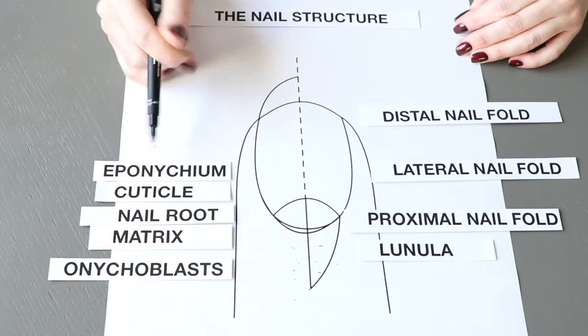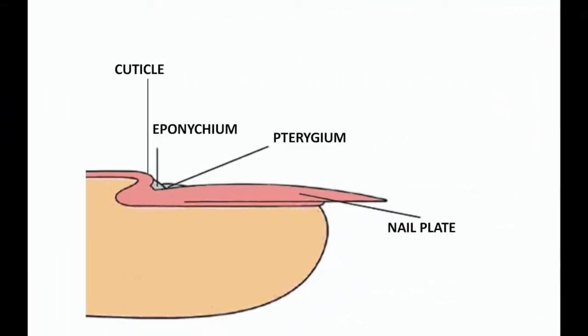Keratinized skin between the cuticle and the nail plate is called eponychium. Eponychium is the living skin at the base of the cuticle, and it is often mistaken for the cuticle. We need to ensure that it is the eponychium we are pushing when working with the nail. The lower part of the cuticle is called pterygium. The slide clearly shows where the cuticle, eponychium, and pterygium are located.